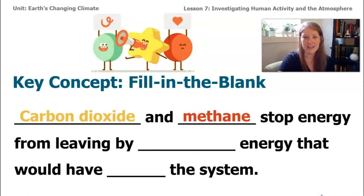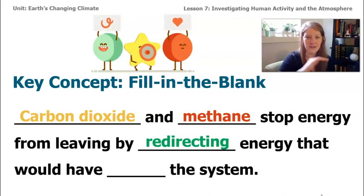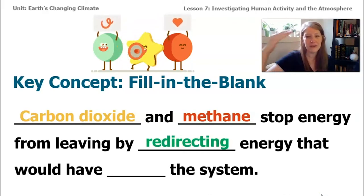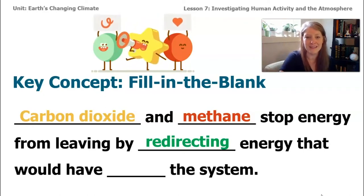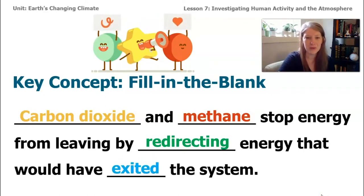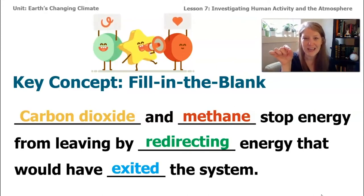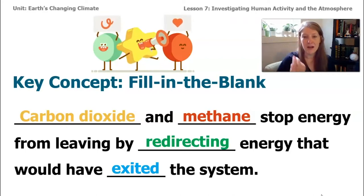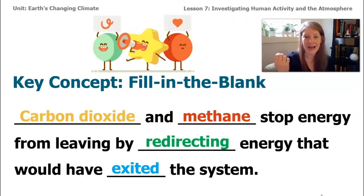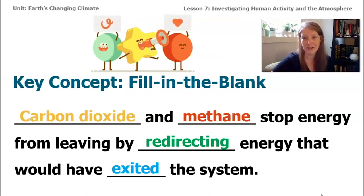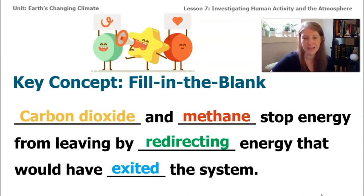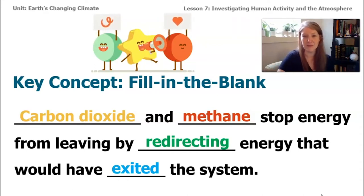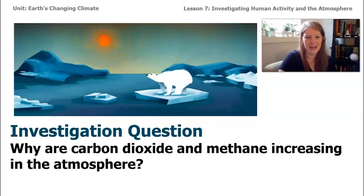Carbon dioxide and methane redirect energy that would have exited the system. We looked at the sim and explored it — we clicked on a little energy arrow and discovered that molecules of carbon dioxide and methane in the atmosphere interact with energy trying to exit our system and redirect it. Sometimes it's redirected back to Earth's surface, where it gets reabsorbed and increases the amount of energy absorbed by Earth's surface.